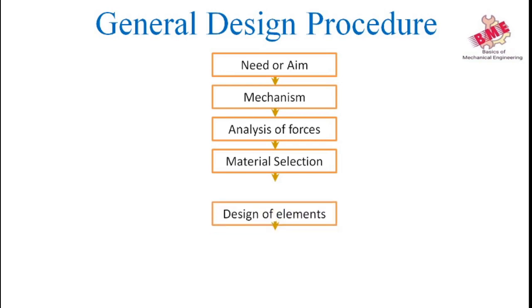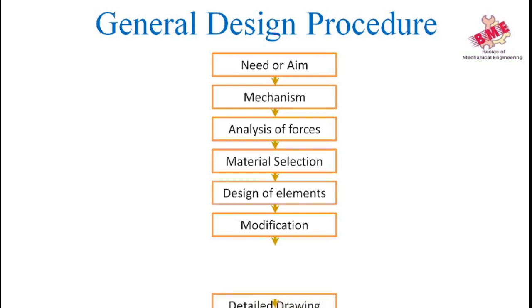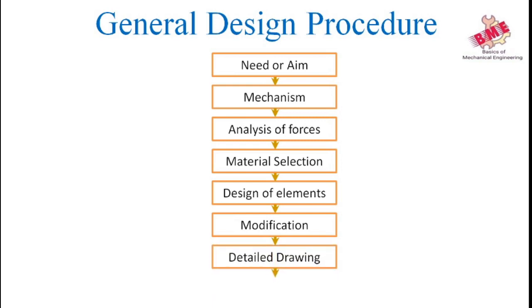The next step is Design of Machine Element: find the size of each member by considering forces acting on it and permissible stresses for the selected material from the design data book. The next step is Modification: modify the size of members to agree with the past experience of skilled workers or skilled design engineers by judgment, to reduce the overall production cost and benefit the manufacturer or organization. The next step is Detail Drawing: draw the detail drawing of each component and assembly of the machine with complete specifications for the manufacturing process. After the detailed drawing is created, it is given to the production department to manufacture the product, with information on which material and manufacturing process are to be used.